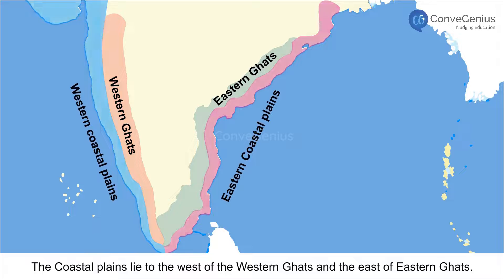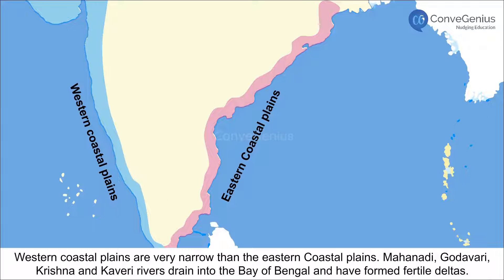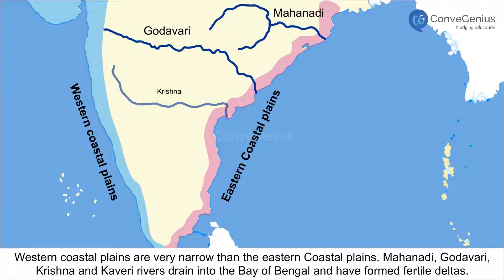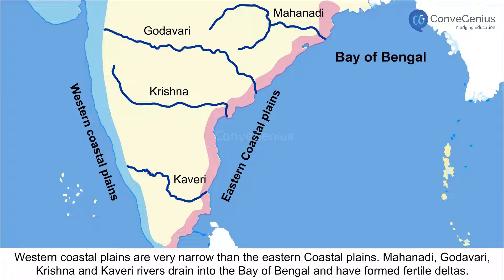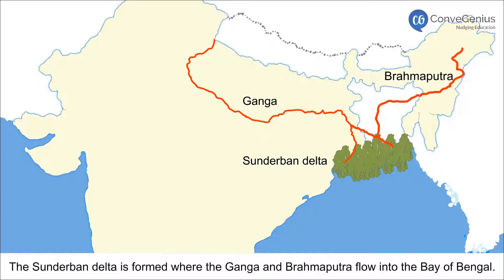The coastal plains lie to the west of the Western Ghats and the east of the Eastern Ghats. Western coastal plains are narrower than the eastern coastal plains. The Mahanadi, Godavari, Krishna and Kaveri rivers drain into the Bay of Bengal and have formed fertile deltas. The Sundarbans delta is formed where the Ganga and Brahmaputra flow into the Bay of Bengal.